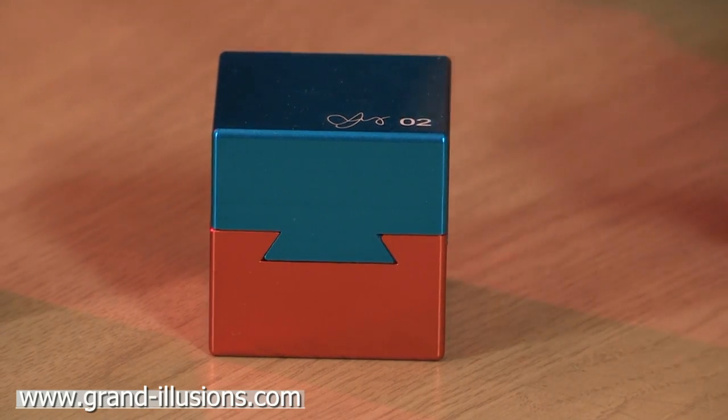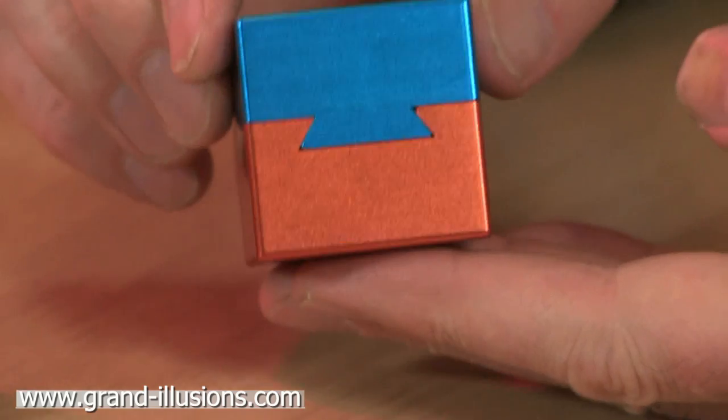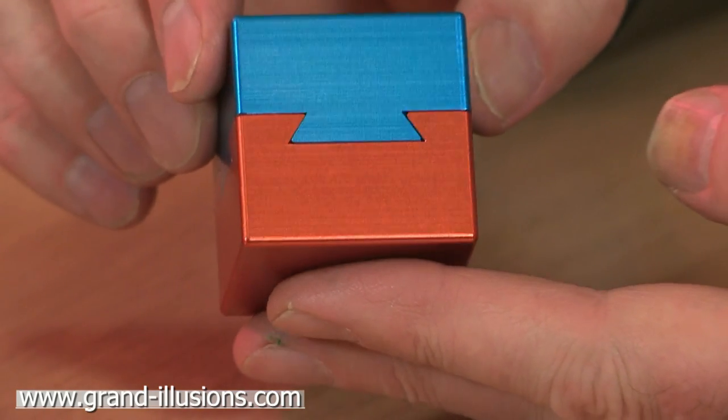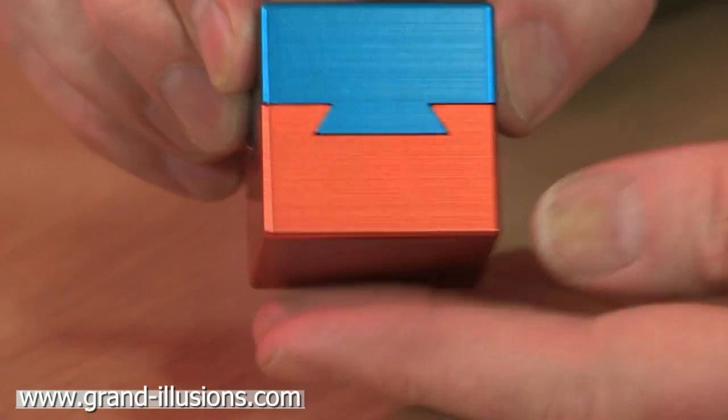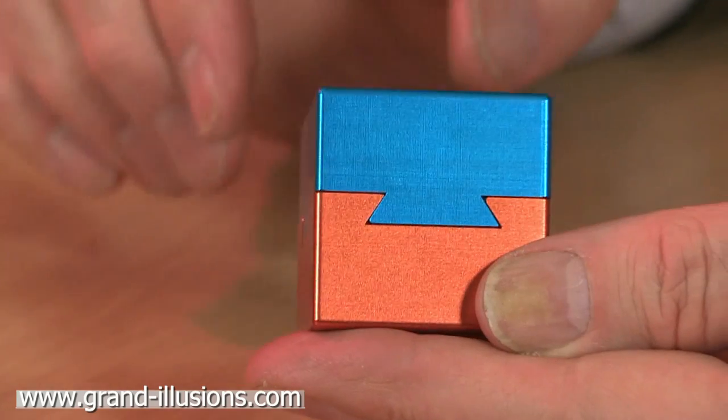Here's a dovetail cube puzzle, very nicely made of aluminium anodized. Clearly there's a dovetail here and this should just slide forward or slide back.